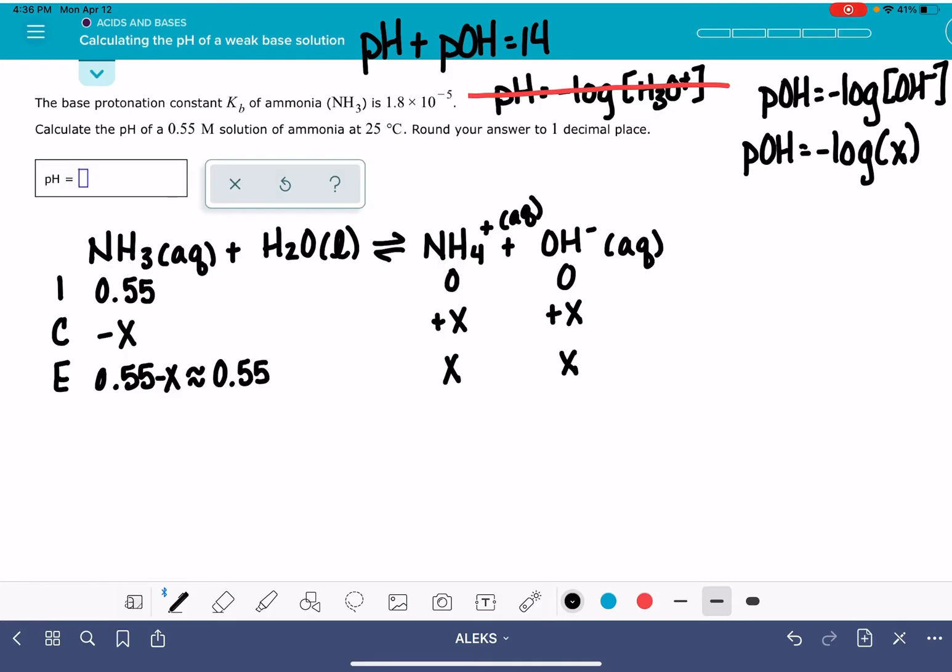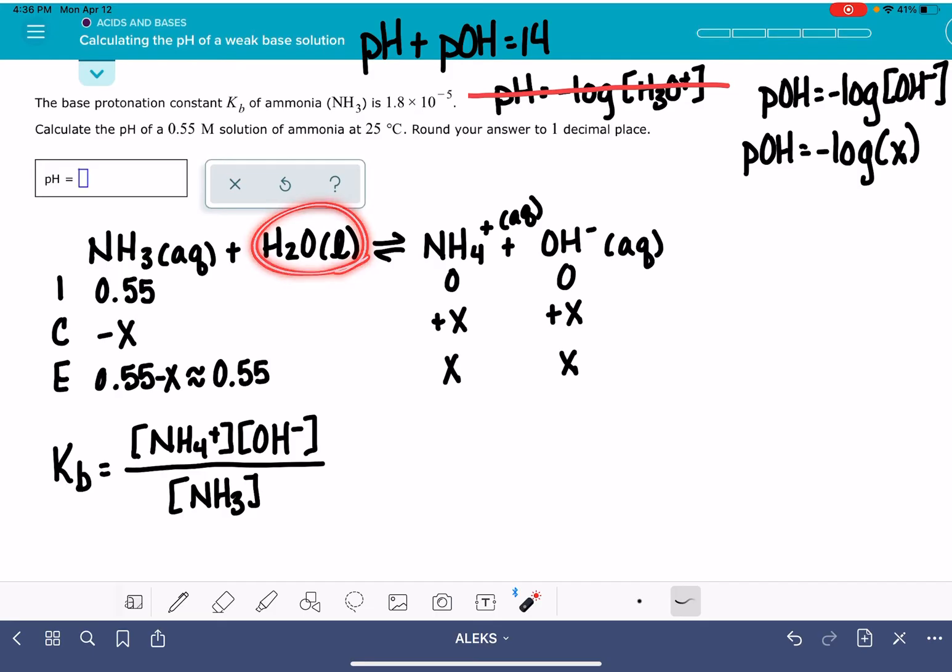Let's set up an equilibrium expression so we can solve for X. The equilibrium expression is Kb equals our products, NH4+ times OH-, divided by our reactants, products over reactants. We're going to leave out water because we always leave out pure liquids.